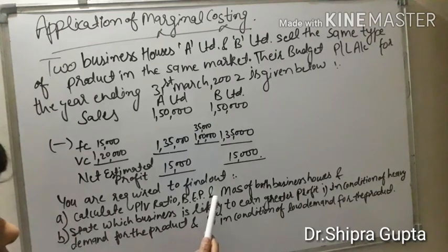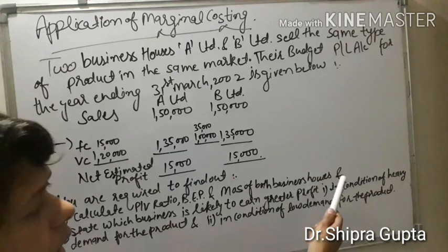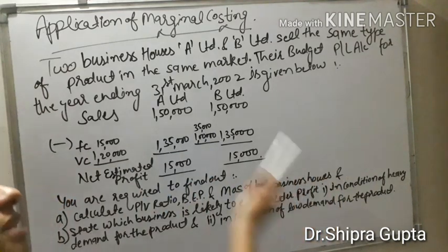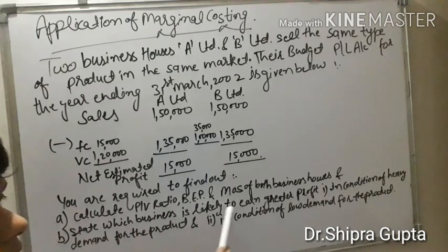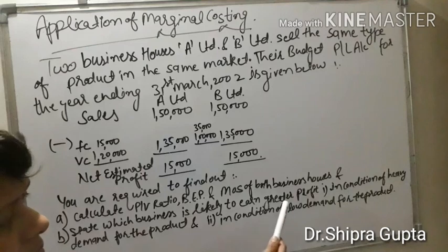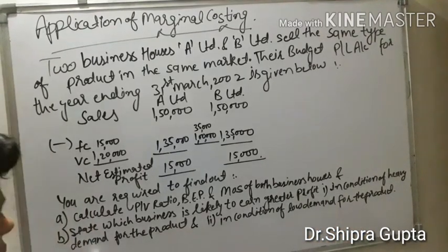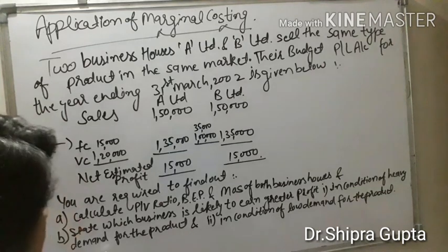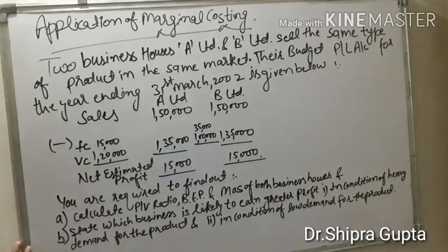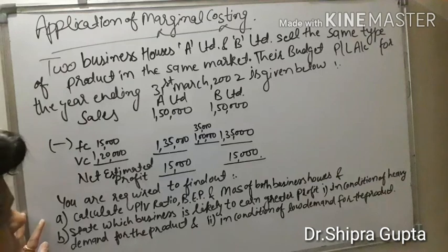You are required to calculate: profit volume ratio, breakeven point, and margin of safety of both business houses. The second part asks which business is likely to earn greater profit in the condition of heavy demand for the product and in the condition of low demand for the product. The first point is the same as earlier questions; the second point is changed.